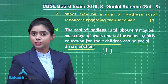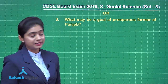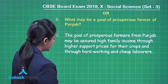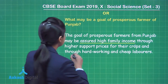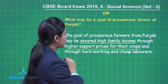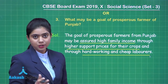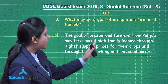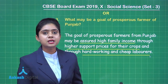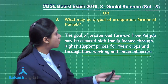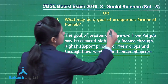The choice for Q3: What may be a goal of a prosperous farmer of Punjab? The goal of prosperous farmers from Punjab may be assured high family income through higher support prices for their crops and through hardworking and cheap laborers. Assured high family income, higher support prices, and access to cheap laborers could all be the goals of a prosperous farmer of Punjab.